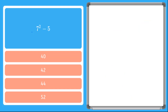This problem says seven squared minus five. Remembering our order of operations, we do anything in parentheses first — this expression doesn't have any — so we go to step two: solve the exponents. Seven squared equals seven times seven, which is forty-nine. So we have forty-nine minus five. There's no multiplication or division in this problem.